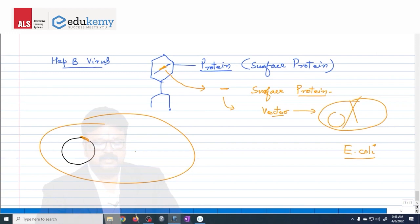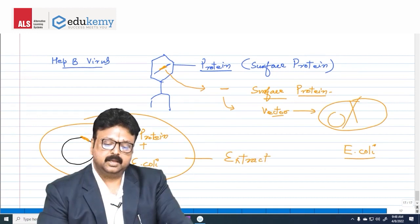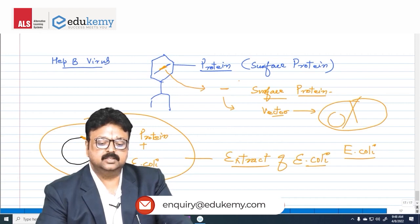Now this E. coli will produce some proteins for its own life. Along with those proteins, they also make those proteins which are surface proteins. This protein will be made. In the extract of E. coli, cell extract of E. coli, you are going to have this surface protein. Answer is yes.